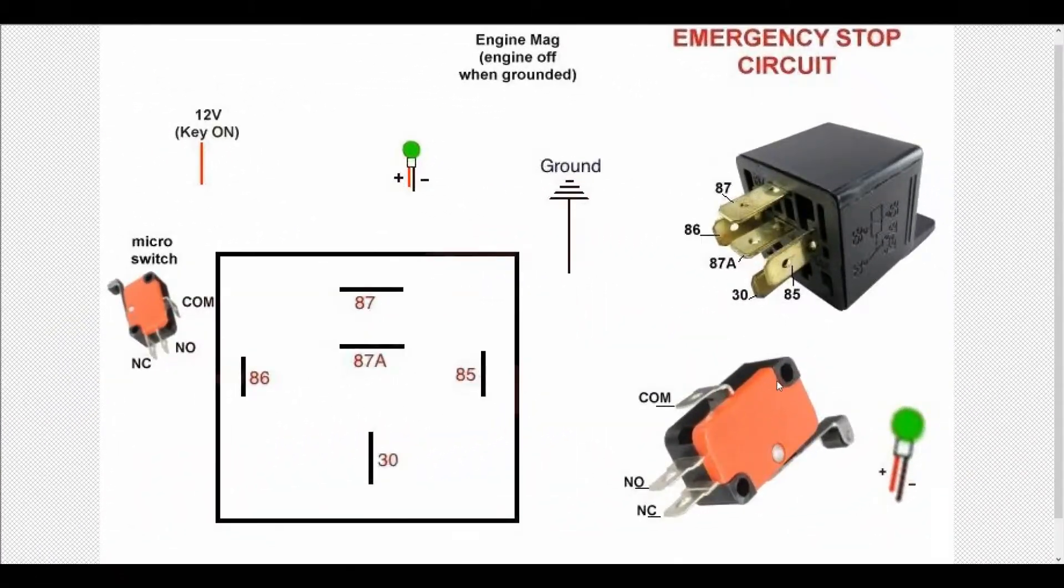So here's a look at the emergency stop circuit. You can see here the relay and I've noted the pins. You can also see that I'm using a micro switch and I've noted the pin names on it as well as an indicator light which has a positive and a negative. Now all this system works off of 12 volts.